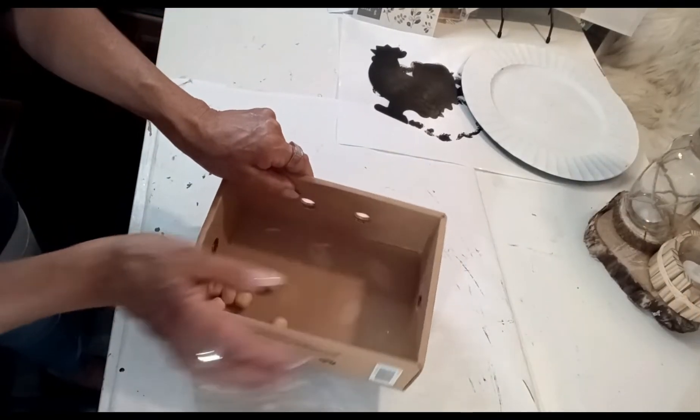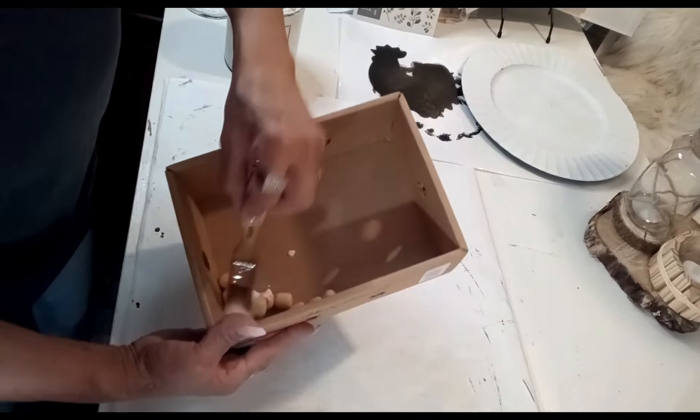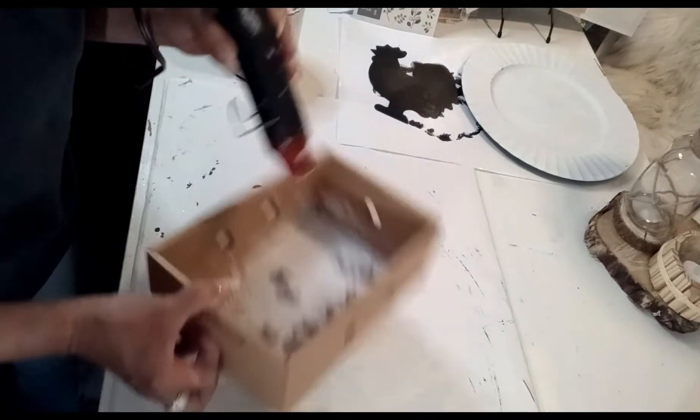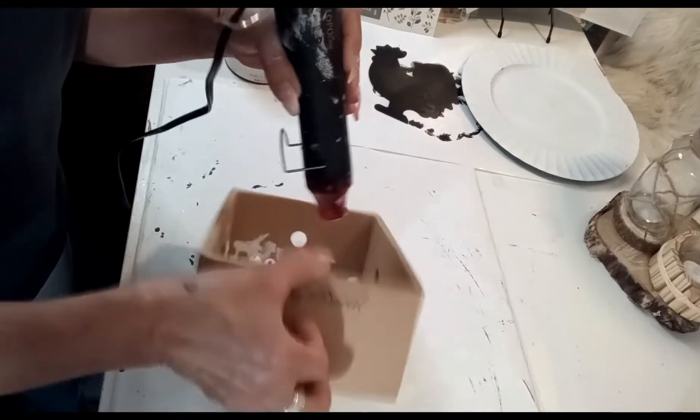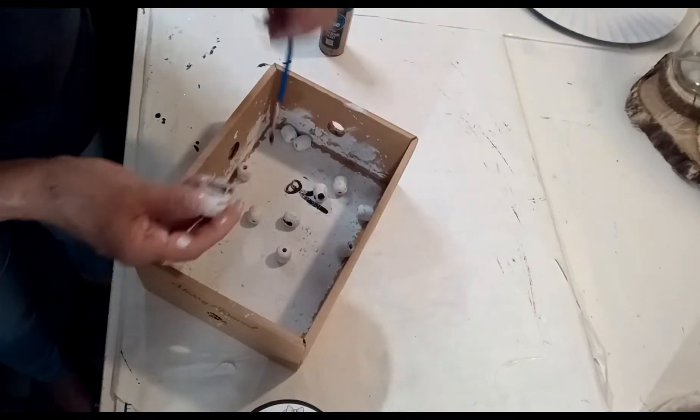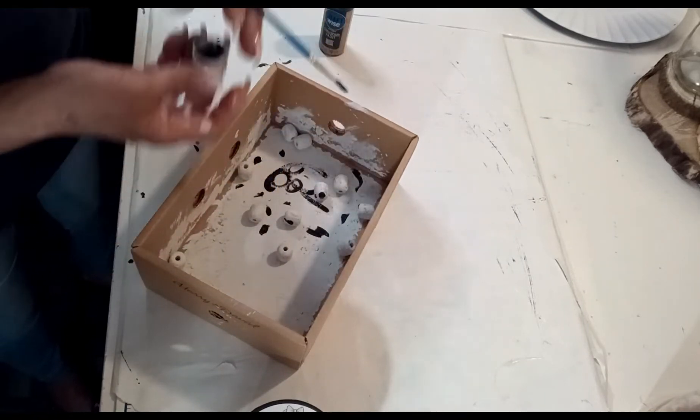I have these wooden beads I'm going to go ahead and paint them with this white chalk paint. I'm doing it this way because I want them to be textured. I'm going to help it dry with some heat and then I'm going to put some black paint on the box so they can be black and white.